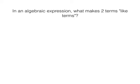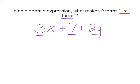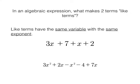In an algebraic expression, what makes two terms what we call like terms, meaning that they are the same kind of term. Now, first of all, what's a term? Well, let's remember 3x plus 7 plus 2y. Each of these separately is a term. They're separated by addition and subtraction signs. So 3x is a term, 7 is a term, and 2y is a term. So what makes expressions like terms? Like terms have the same variable with the same exponent.